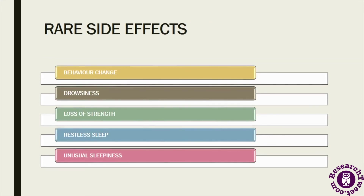The third category of side effects are rare side effects, occurring in only about 0.1 percent of patients taking metformin. These include behavior changes, drowsiness, loss of strength, restless sleep, and unusual sleepiness. These rare side effects are generally found due to combinations with metformin, such as unhealthy habits or interactions with other substances.